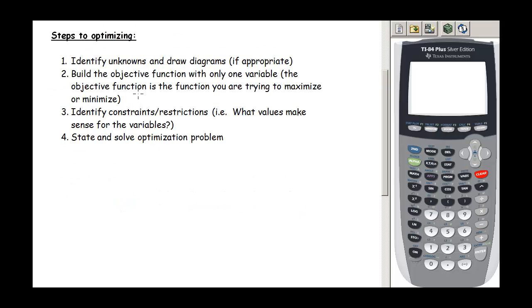So here's our steps. In order to maximize or minimize, the first thing we're going to do is identify the unknowns - the variables. What quantities are we looking at? Are we looking at price? Are we looking at the length of the side of a box? And if necessary, we're going to draw diagrams. This typically comes up when there's some sort of geometry component.